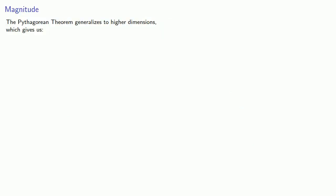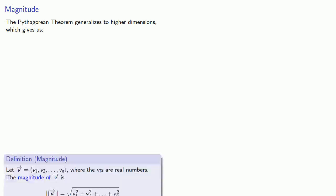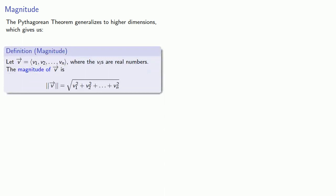And this leads to the following idea. The Pythagorean theorem generalizes to higher dimensions. And this gives us the following. The magnitude of a vector is going to be the square root of the sum of the squares of the components. And this is just a generalization of the Pythagorean theorem to higher dimensions.